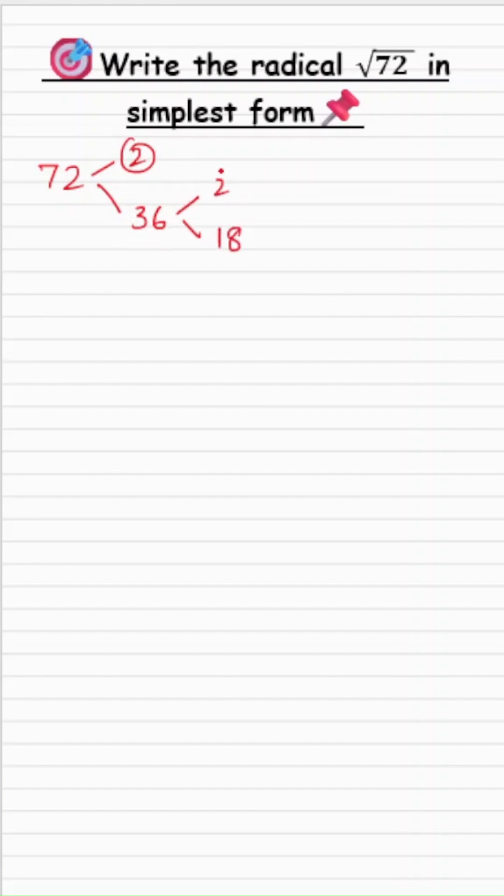36 is 2 times 18. 2 prime. 18 is 2 times 9. And 9 is finally 3 times 3. And we know that these all are the prime factors.